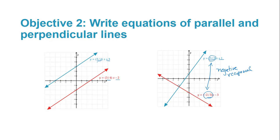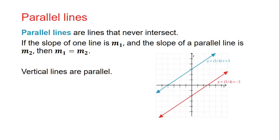For parallel lines, notice that the slopes were the same. Parallel lines are lines that never intersect. If the slope of one line is m₁ and the slope of a parallel line is m₂, then m₁ equals m₂. Vertical lines cannot have their slope defined, so we also state separately that vertical lines are parallel to each other. The key thing is that the slopes of parallel lines are the same.